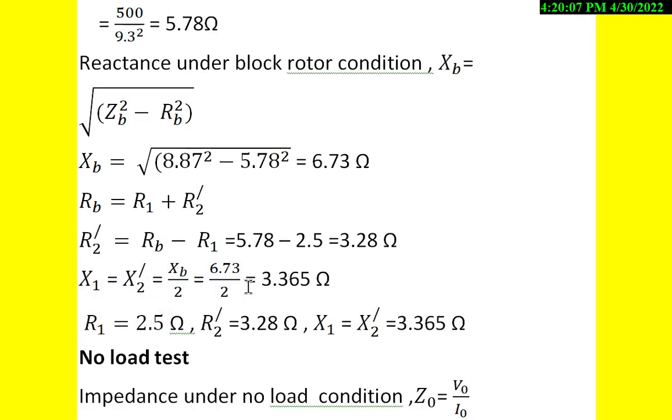We also know that X1 = X2' = XB/2. XB is calculated as 6.73Ω. Therefore, X1 = 6.73/2 = 3.365Ω.